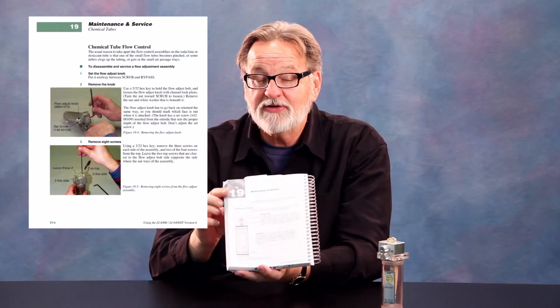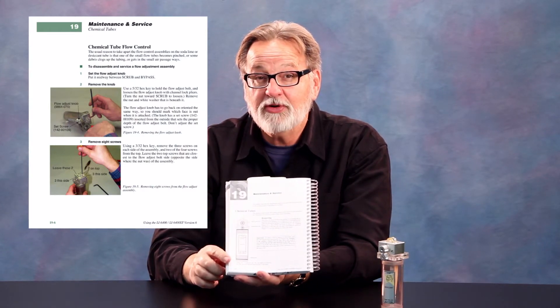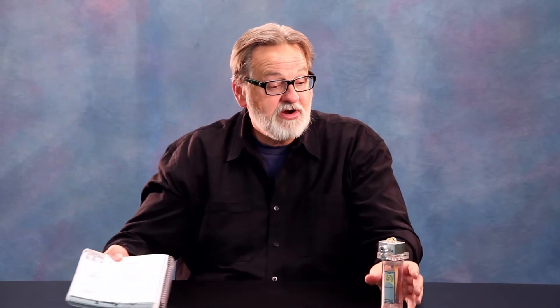The knob can become loose as a result of operation or it may need to be removed for maintenance procedures. Additional maintenance procedures can be found in manual book 3 of the LI6400 user's guide, specifically chapter 19, which also covers additional maintenance items for the chemical tube. Let's get started.